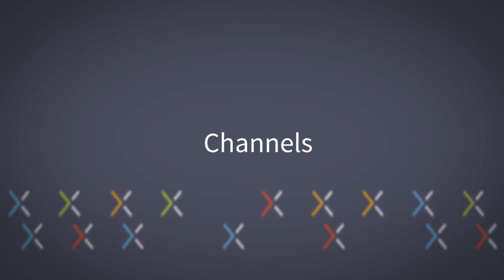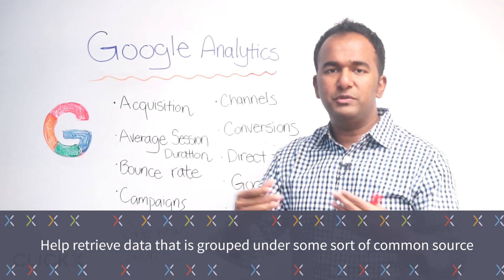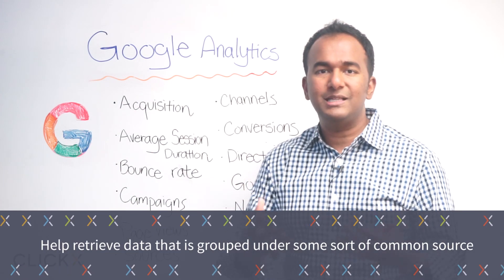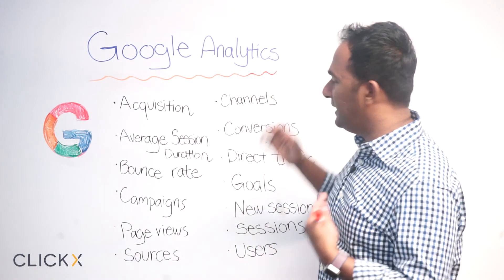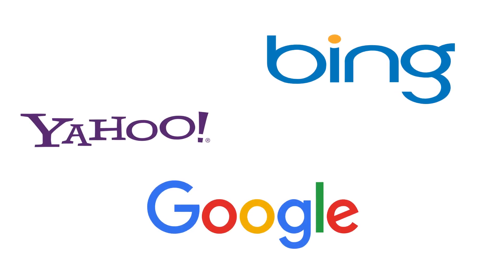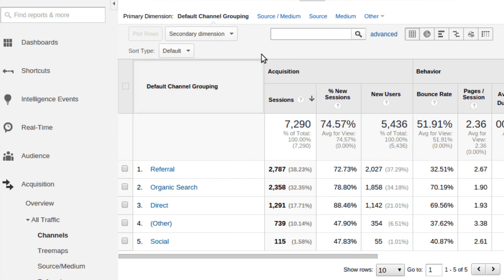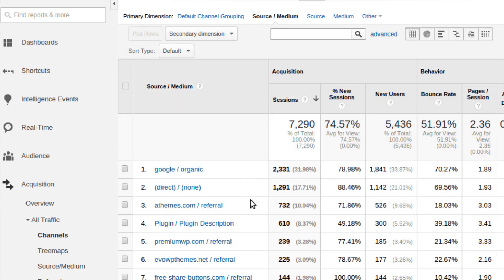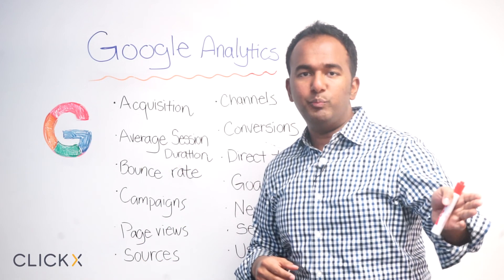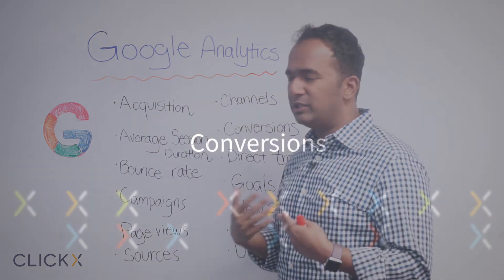Channels are really awesome because inside channels you actually get to see the group of all the different sources coming together. For example, with the organic channel, people are searching on Bing, on Yahoo, and on Google. What Google Analytics does is group all of them under one channel and give you the organic search, so you can get better insights into how that channel is performing — instead of trying to combine data from Bing versus Google and find an average, you just click on channels and get that information much quicker.